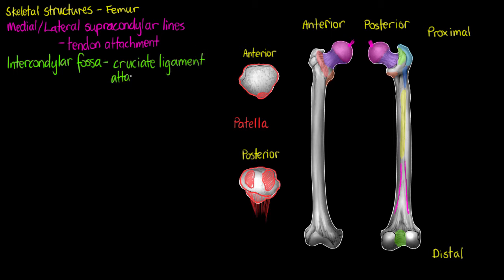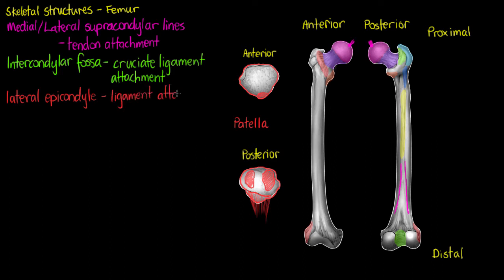On the lateral or outer side of our femur, highlighted in red, is the lateral epicondyle, which is going to act as a ligament attachment point and also helps to form part of our joint capsule with the specific ligament that attaches there. Functionally, that's going to help form our knee joint.